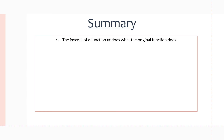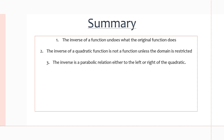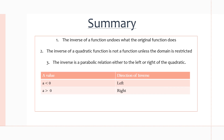Here's a summary of everything we went over in this video. The inverse of a function undoes what the original function does. The inverse of a quadratic function is not a function unless the domain is restricted. The inverse of a function is a parabolic relation either to the left or the right of the quadratic — we saw these in the last two examples. If a > 0, it's to the right; if a < 0, it's to the left. Thank you so much for watching — I hope this was helpful and that you'll keep watching the rest of the videos.